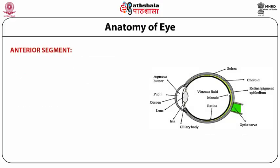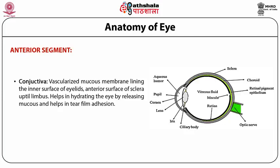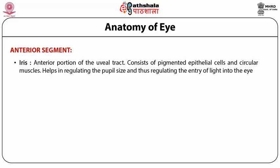The conjunctiva is a thin, translucent, highly vascularized mucus layer lining the inner surface of the eyelids and the anterior surface of the sclera up to the limbus. It helps hydrate the eye by releasing mucus and aids in tear film formation. The iris is the most anterior portion of the uveal tract and consists of pigmented epithelial cells and circular muscles. The iris sphincter and dilator muscles regulate pupil size, thus regulating the entry of light into the eye.